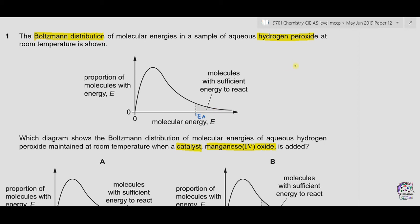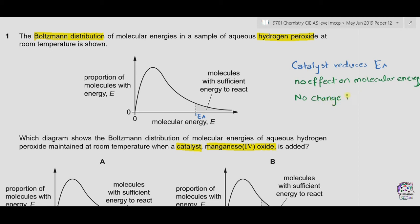When a catalyst is added, it reduces activation energy. A catalyst has no effect on average molecular energies, so there is no change in the shape of the curve. The curve shape only changes with a temperature change. In this question the temperature is kept constant, so only the activation energy changes.